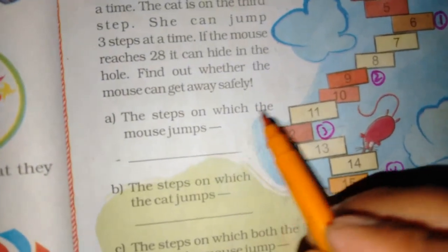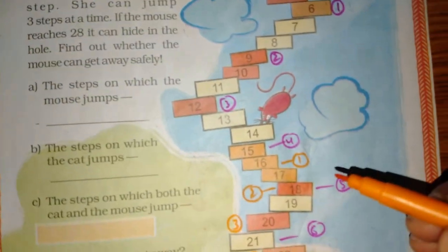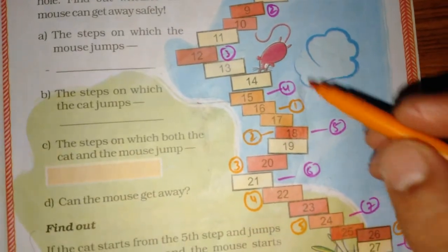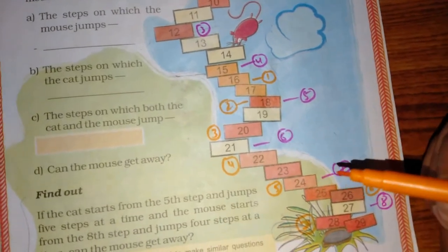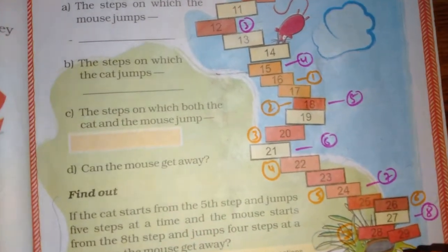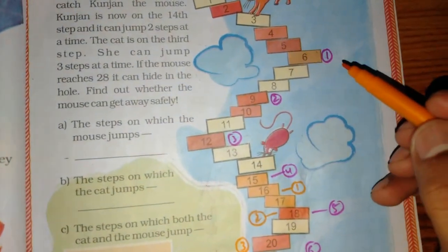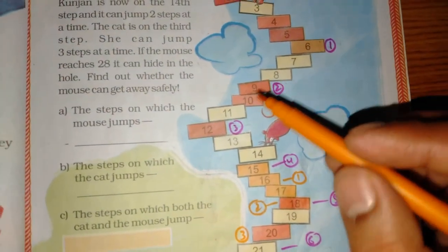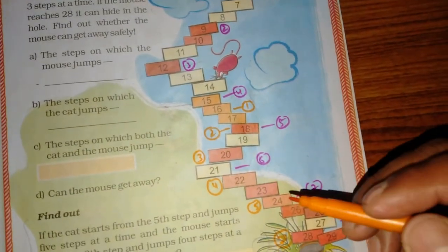The steps on which the mouse jumps. Which step? Where did you jump? 16, 18, 20, 24, 28. Where did you jump? 6, 9, 12, 15, 18, 21, 24.